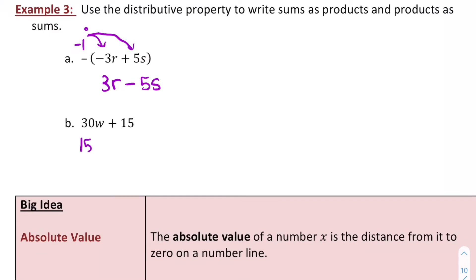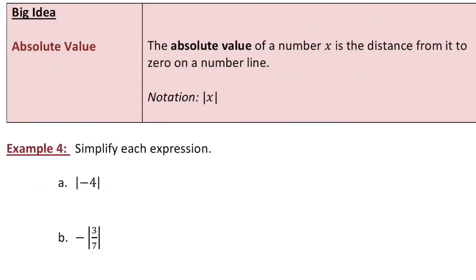And on B, I'm going to use my distributive property to factor out a common factor of 15 and rewrite this in its equivalent form 15 times the quantity 2W plus 1.